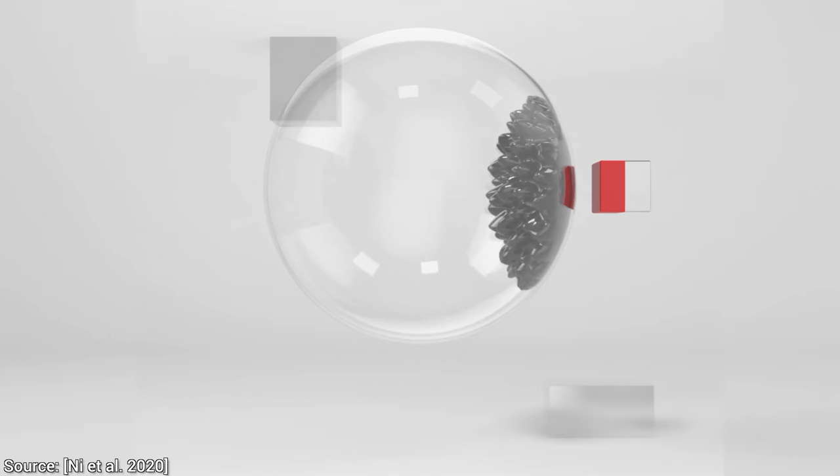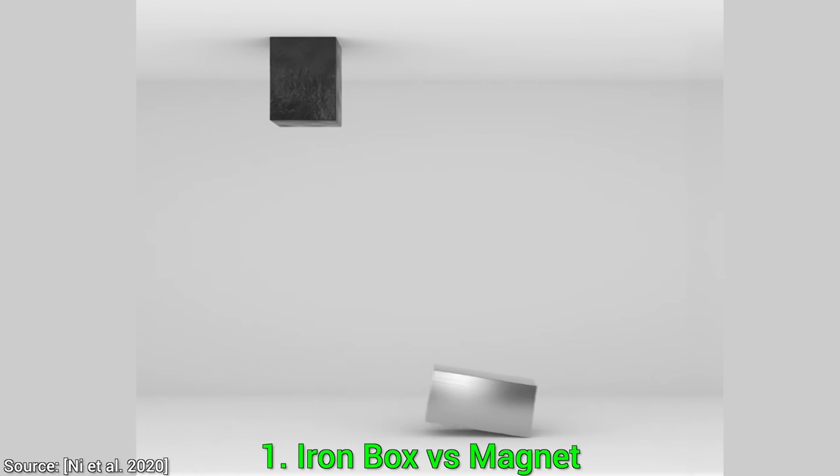Let's look at the rigid bodies first in experiment number one. Iron box versus magnet. We are starting out slow, and now, we are waiting for the attraction to kick in…and there we go. Wonderful.